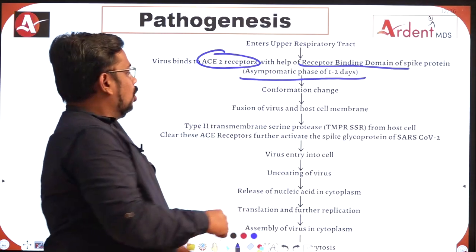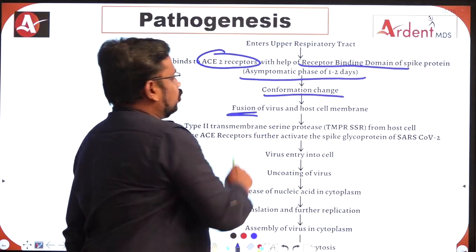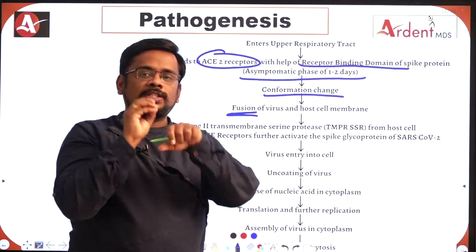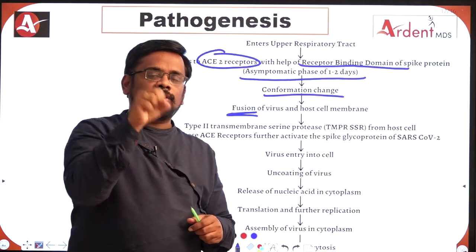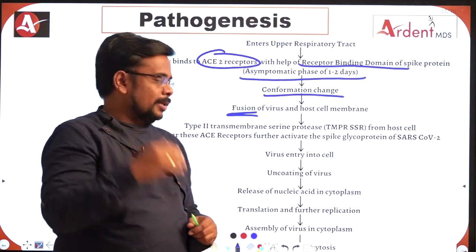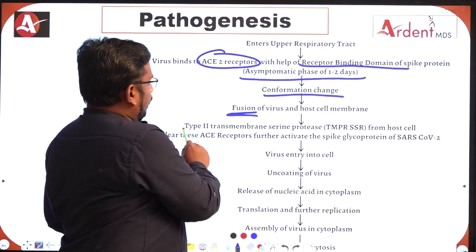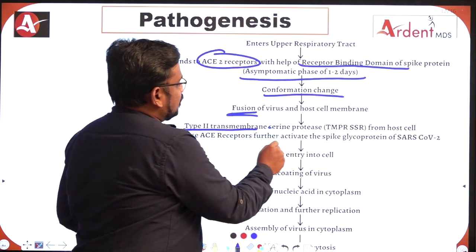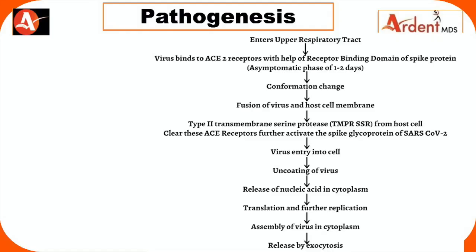Once bound, it undergoes a conformational change, resulting in fusion of the virus with the host membrane. Once the virus fuses with the host membrane, the next step is activation of Type 2 Transmembrane Serine Protease in the host cell. This enzyme cleaves the ACE2 receptors and activates the spike glycoprotein, allowing more virus to enter inside the cell.